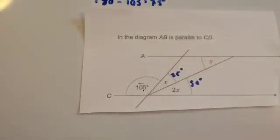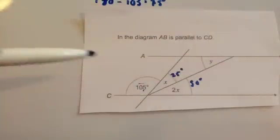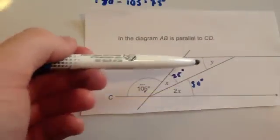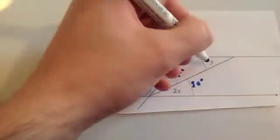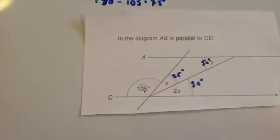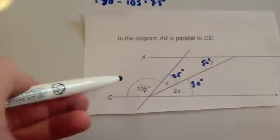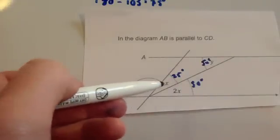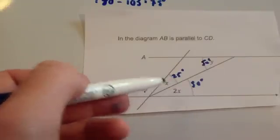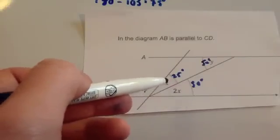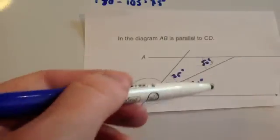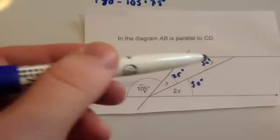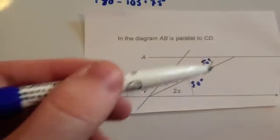Because these two lines are parallel, you can see a Z angle — Y and 2X are in the Z shape. That means Y would be 50 degrees. To recap: because that's 105, that leaves 75 degrees for this section which is 3X, so dividing by 3 gives X = 25. The 50 and Y are alternate angles — the Z shape — so Y is 50 degrees.